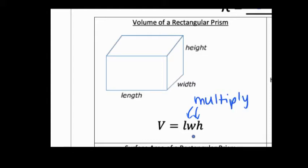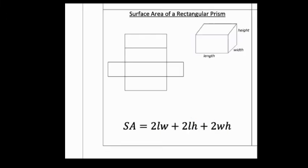When you see those letters up against each other, remember there's a multiplication sign between them, so just multiply those numbers. As we get into surface area — which is all about the outside of a shape, like wrapping paper on a box — the formula is: SA = 2(LW) + 2(LH) + 2(WH), that is, two times length times width, plus two times length times height, plus two times width times height.